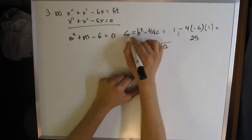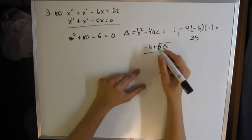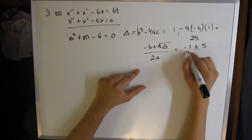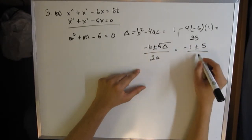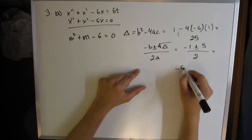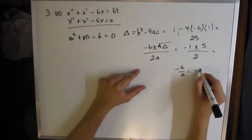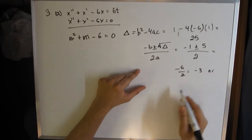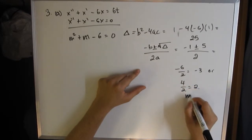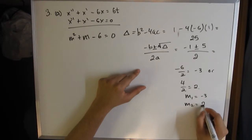Which will be -1 ± 5 all over 2, which is either -6/2 which is -3, or 4/2 which equals 2. So m₁ is -3, and m₂ is 2. Since delta was greater than 0, we can automatically assume our complementary equation.